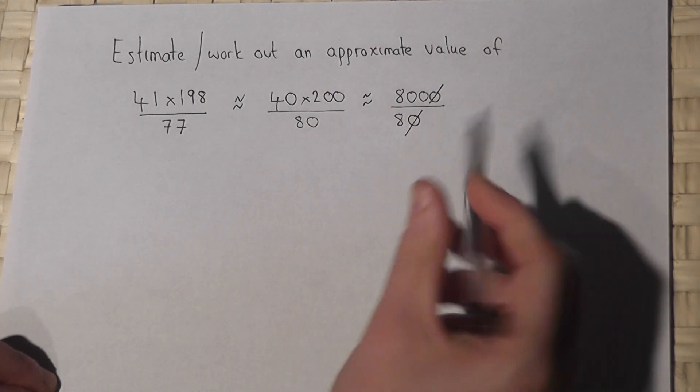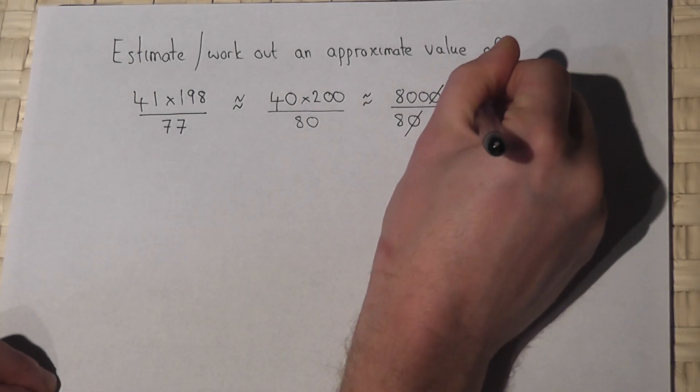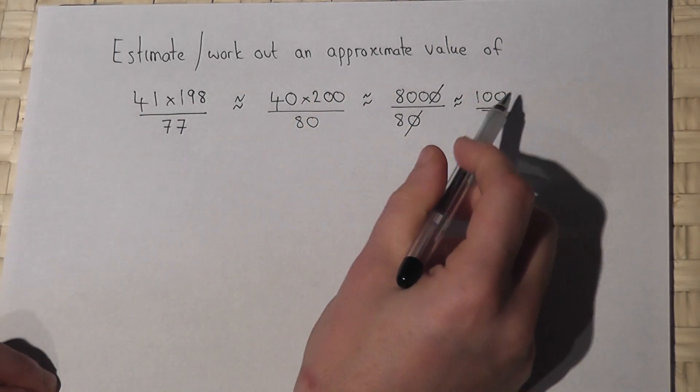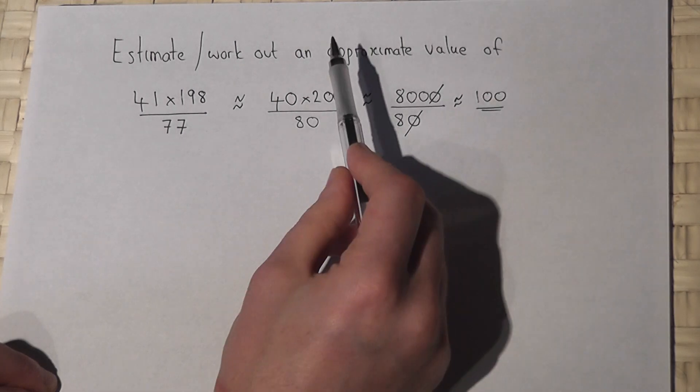So 800 divided by 8 is approximately 100. So 100 is an estimation, or approximation, to this given calculation.